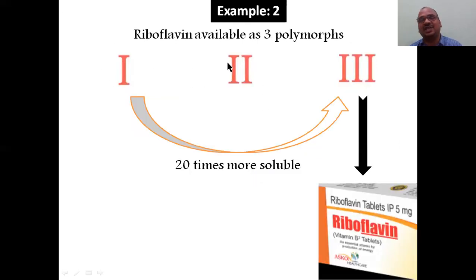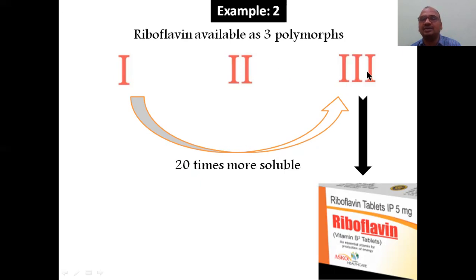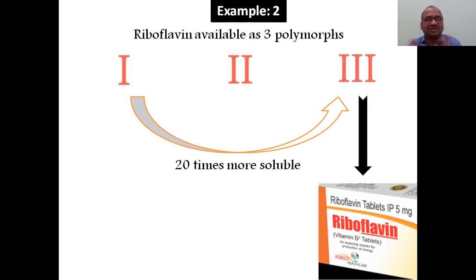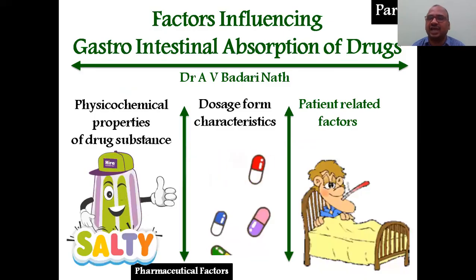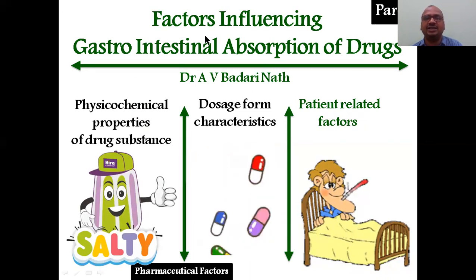Another example: riboflavin (vitamin B) exists in three forms. Form three is 20 times more soluble than the others. Therefore, you can prepare riboflavin tablets using the third form — mix it with excipients and compress into a tablet. If you want sustained release, use form one, which is less soluble. We will cover part four in the next session.